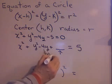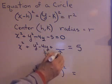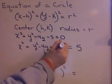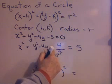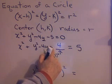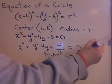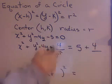That's 2, and square it. What do you get? 4. Add 4 here. Remember, if you add something to one side of an equation, you must add it to the other side of the equation.